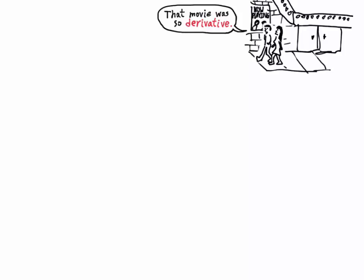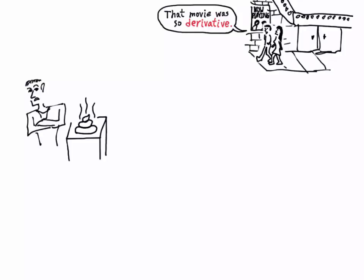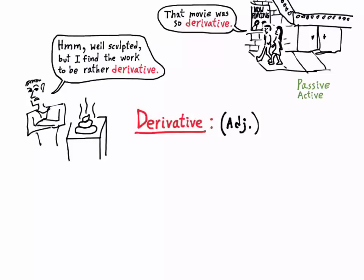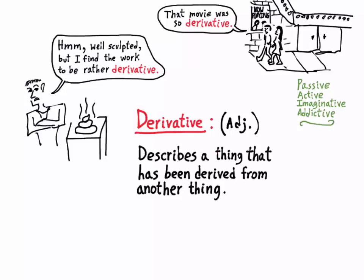You may hear the word derivative used when you're coming out of a movie theater and someone might say, that movie was so derivative. Or maybe at a museum, at a sculpture exhibit, someone will say, I find that work to be derivative. Derivative in that usage is an adjective — adjectives often end in I-V-E — and it means something that has been derived from another thing.